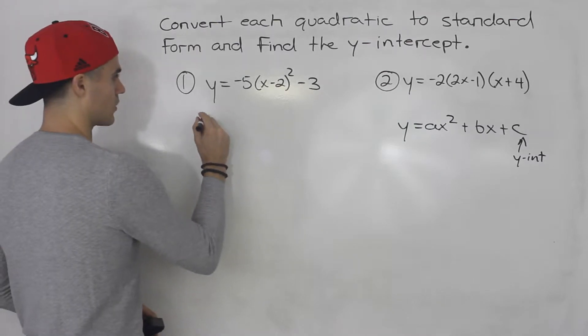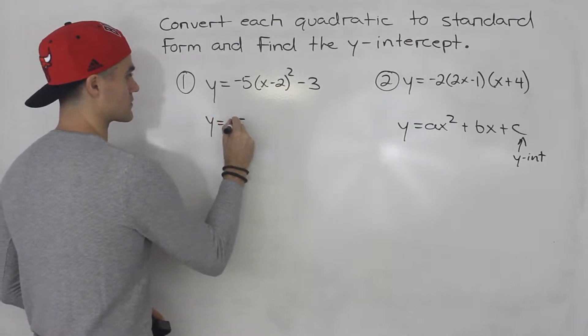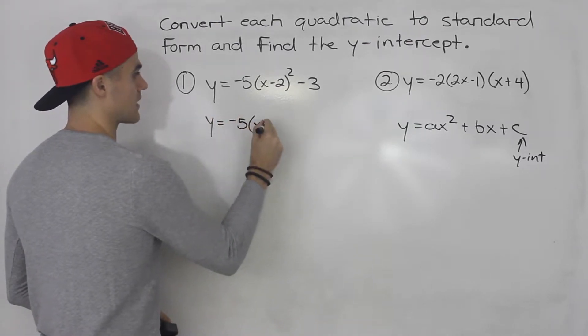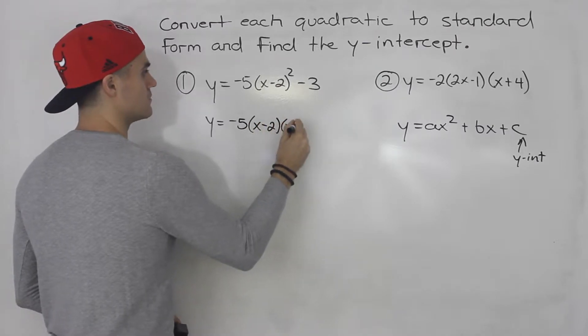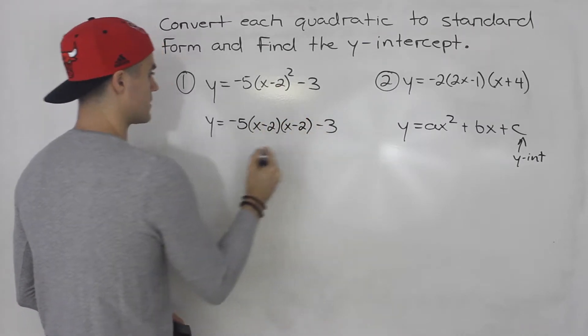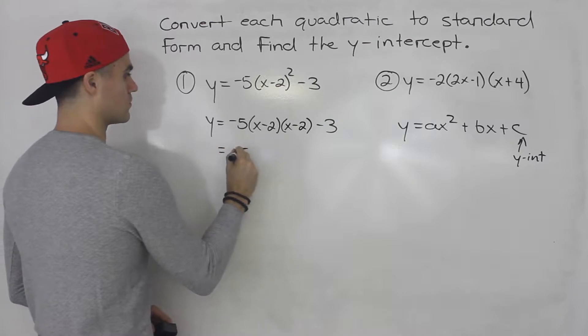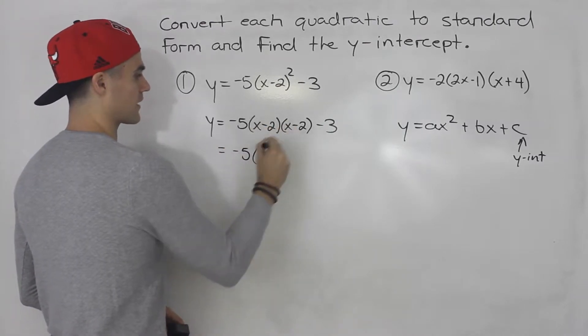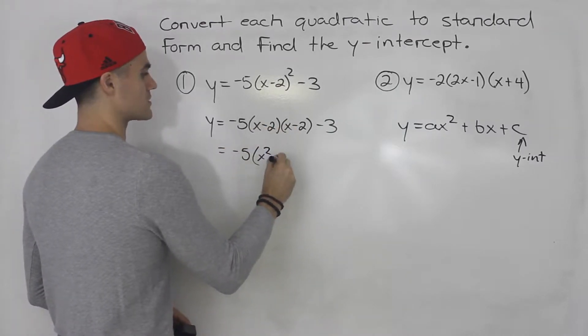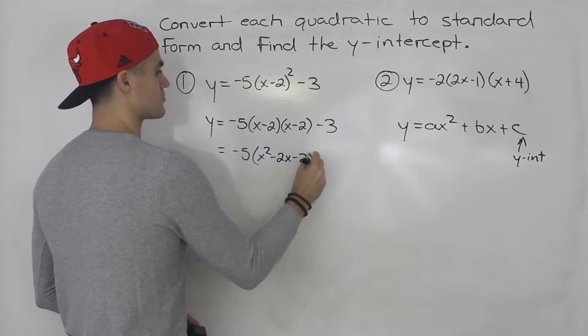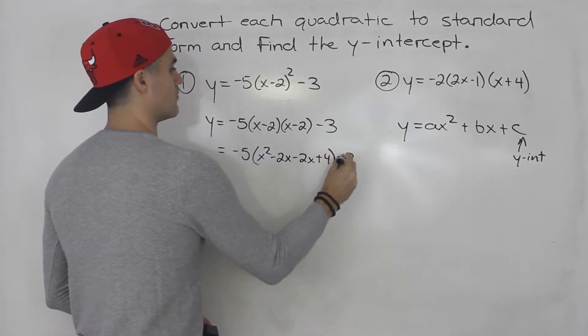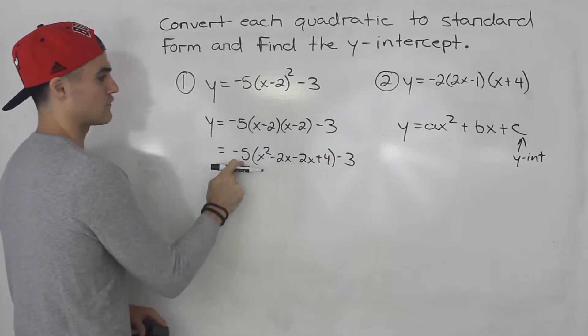So here we would have, let's rewrite negative 5, this is x minus 2 times x minus 2 and this is minus 3. So you can foil these brackets out so you'd have x squared minus 2x minus 2x plus 4 minus 3, keeping the negative 5 outside.